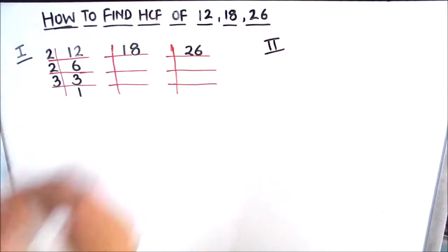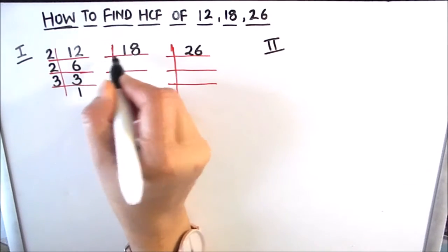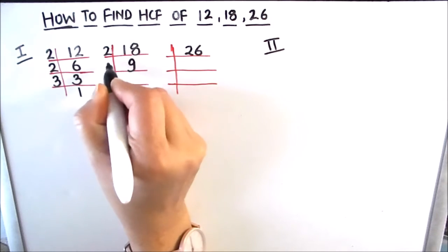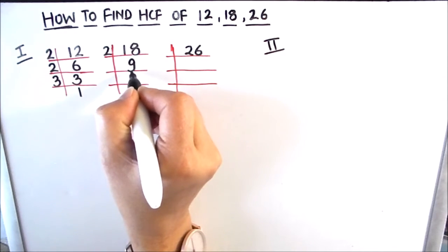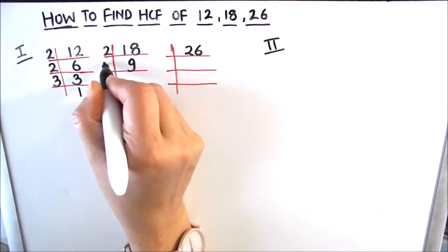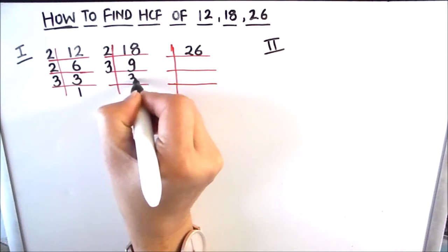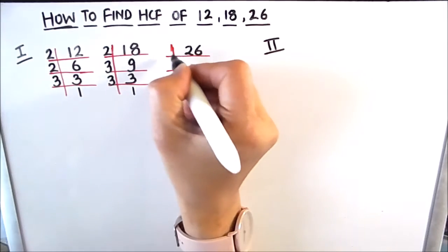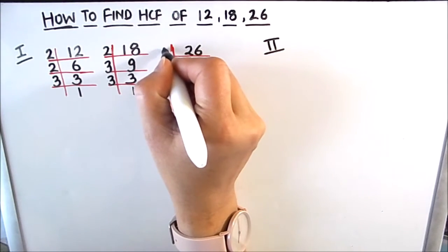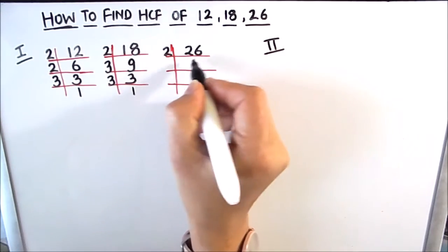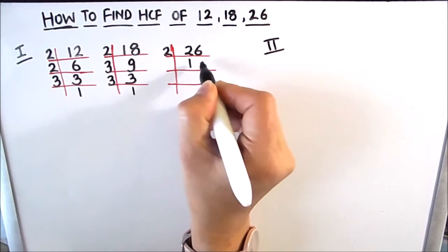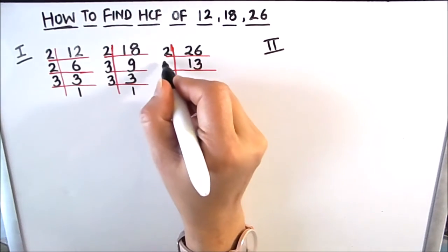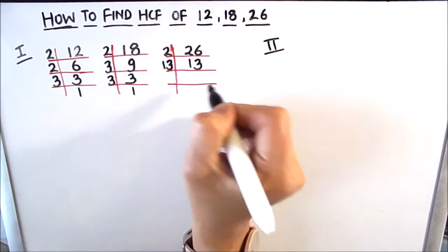Next we find the factors of 18: 2 times 9 is 18. 9 is an odd number, divisible by 3: 3 times 3 is 9, and 3 times 1 is 3. Next, the factors of 26: 26 is an even number, 2 times 13 is 26. 13 is a prime number, only divisible by 13: 13 times 1 is 13.